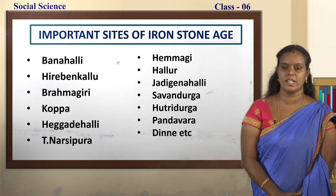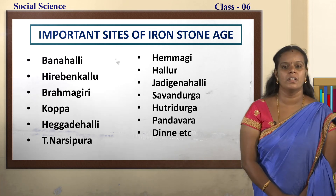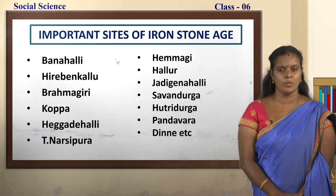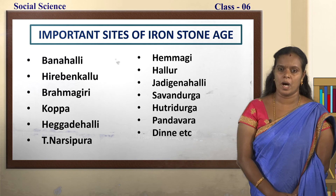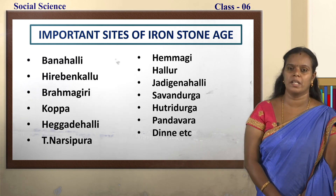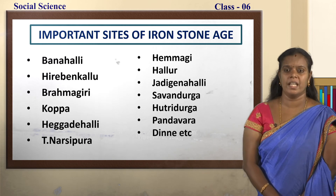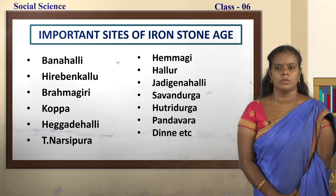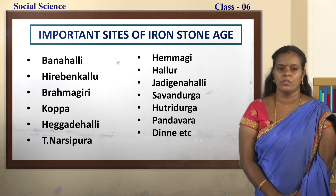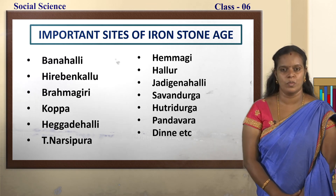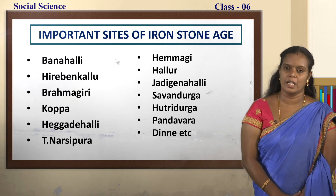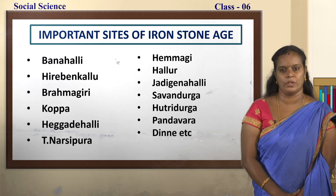The important sites of Iron Stone Age are Banahalli, Hirabennakallu, Brahmagiri, Koppa, Hegadehalli, T. Narasipura, Hemagi, Hallur, Jadgenahalli, Savandurga, Hutridurga, Pandavara Dine, etc. I want all of you to look at page number 64 of your textbook where, in the map, we can find all these important sites marked for you.